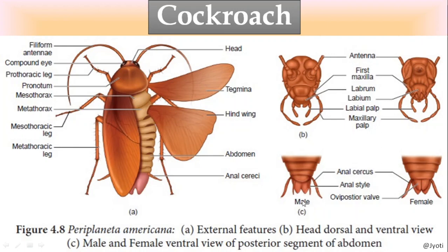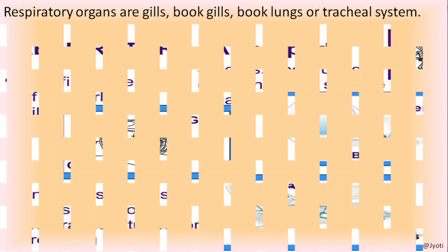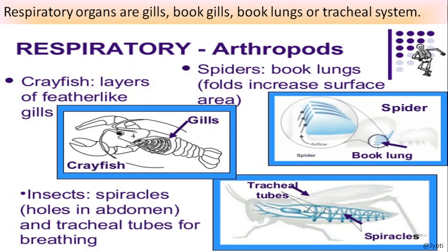Male and female cockroach can be distinguished by the presence of a specific structure called anal style - or caudal style - present in male cockroach but absent in female. You can see two extra outgrowths present in the male. The respiratory organs may be gills, book gills, book lungs, or tracheal system. The tracheal system is the respiratory system in cockroach. Book gills and book lungs are present in other members of Phylum Arthropoda.